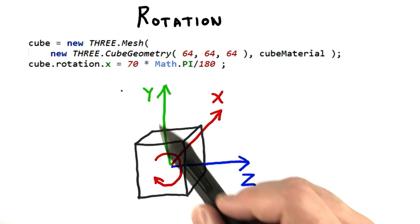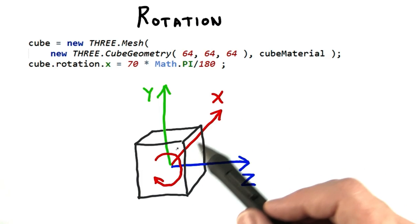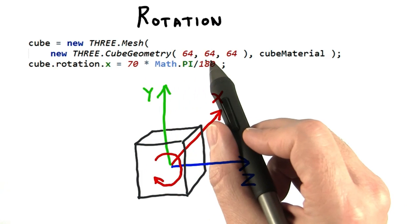The object will rotate around its center along that axis in a counterclockwise fashion. The angle is specified in radians, which computers like.